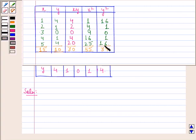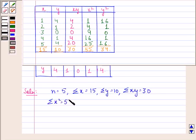Hence we have n = 5, Σx = 15, Σy = 10, Σxy = 30, Σx² = 55, and Σy² = 34.